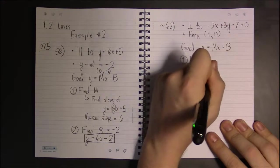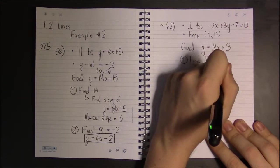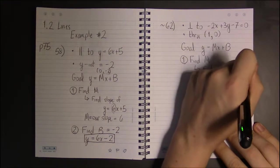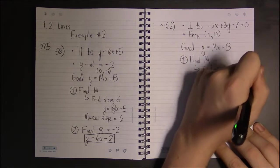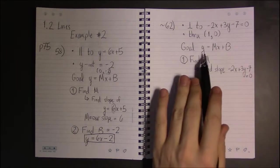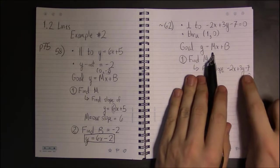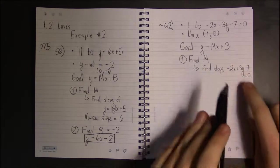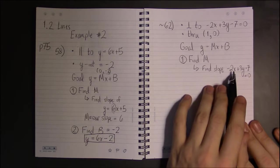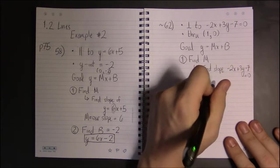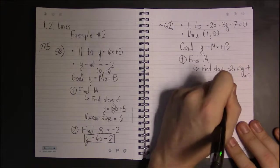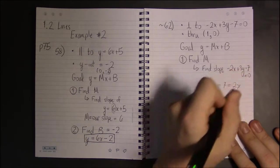So that means we have to find the slope of minus 2x plus 3y minus 7 equals 0. And in this case, it's probably going to be easiest to do that just by getting this line in slope-intercept form, in this form. So we need to solve for y. Well, let's see, we can either move the 2x or the 7 - we'll have to do both, so it really doesn't matter what we do first. If we add 2x to both sides, then we have 3y minus 7 equals 2x.